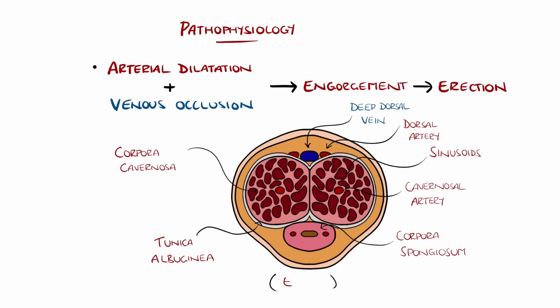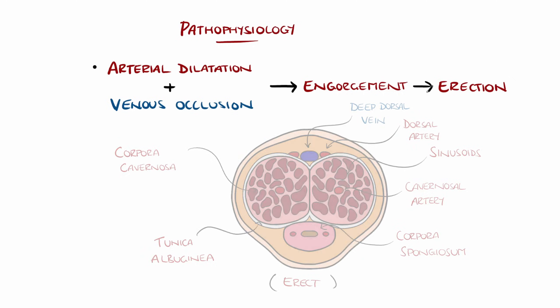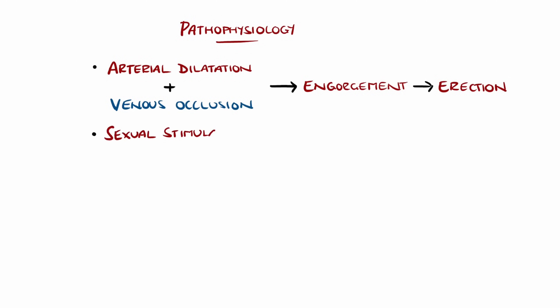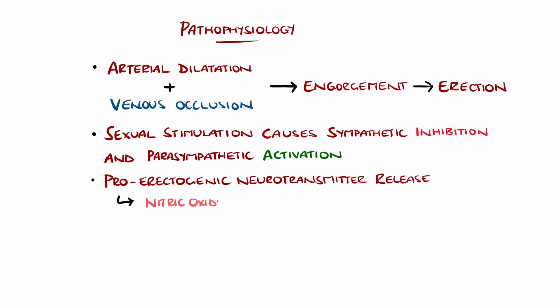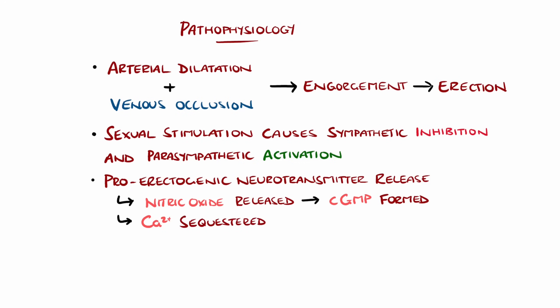Sexual stimulation results in sympathetic inhibition and parasympathetic activation, with release of pro-erectogenic neurotransmitters. For example, nitric oxide is released from presynaptic nerve fibres of the cavernosa, as well as from endothelial cells. This ultimately leads to cyclic GMP being formed, which causes calcium to be sequestered within the endoplasmic reticulum. The reduced calcium level leads to smooth muscle relaxation, promoting sinusoidal blood flow and promoting an erection.